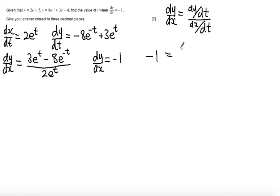So substituting this in, I get minus 1 is equal to 3e to the t minus 8e to the minus t over 2e to the t.